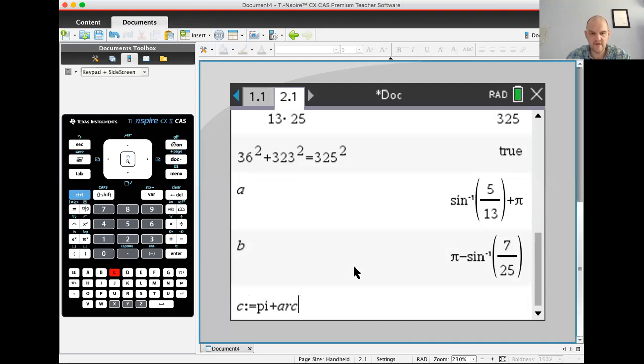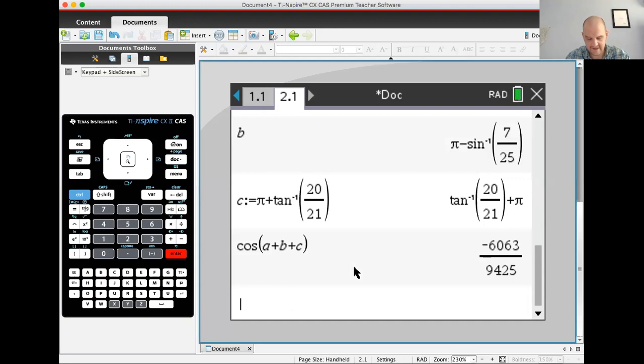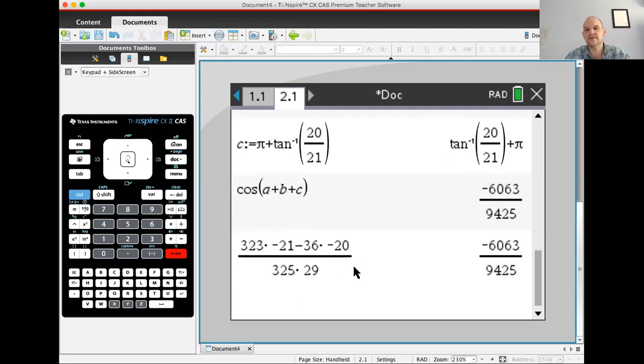So if I find the cosine of A plus B plus C, I get that. If I do my calculation, 323 times negative 21 minus 36 times negative 20 over 325 times 29. Let's see. Negative 6063 over 9425. So good job us. Negative 6063 over 9425.